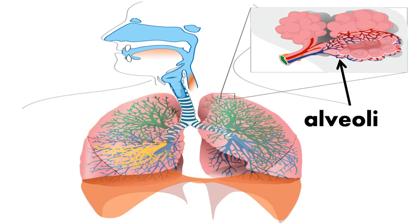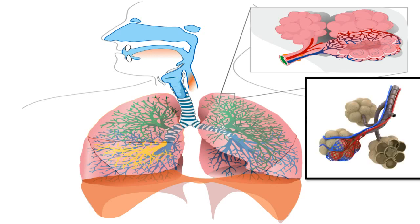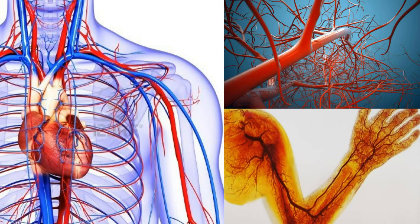Our lungs have around 300 million alveoli, which are small air sacs. The air we breathe in goes through the bronchus and bronchioles and ends up in the alveoli. Both the alveolus and capillary walls are very thin, so blood can easily take in oxygen from the alveoli.